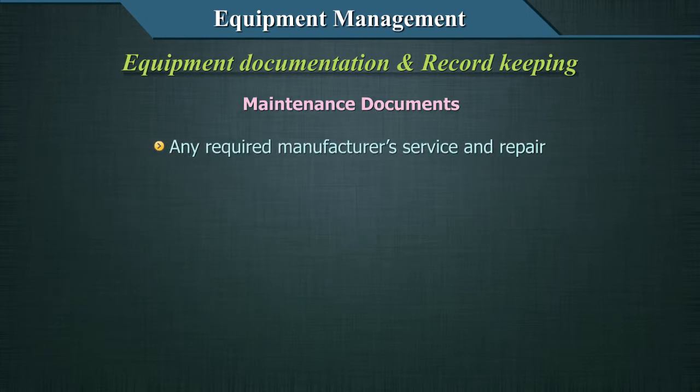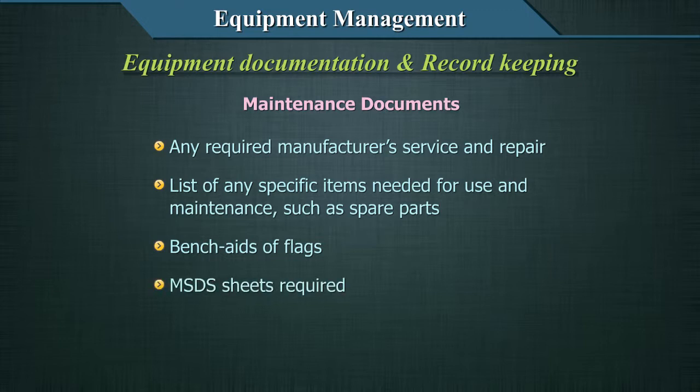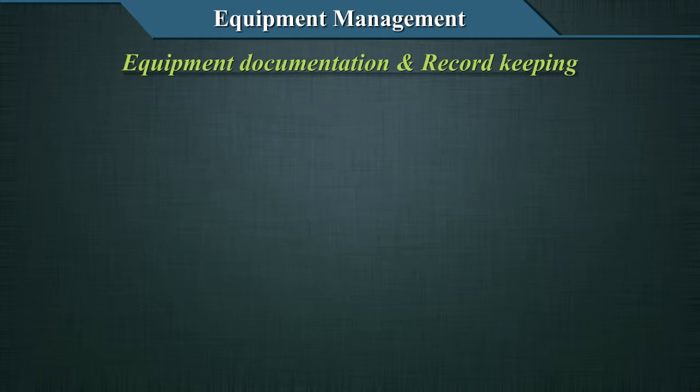Maintenance documents should also include directions for calibrating the instrument, a guide for troubleshooting, any required manufacturer's service and repair information, a list of specific items needed for use and maintenance such as spare parts, bench aids or flags, and required MSDS sheets.